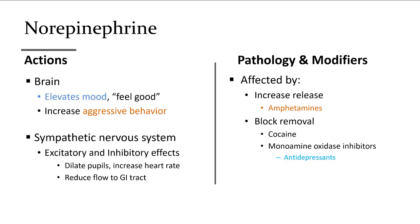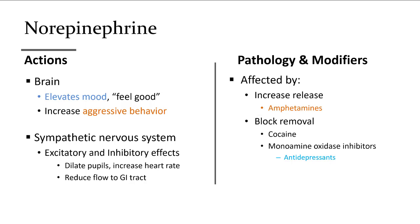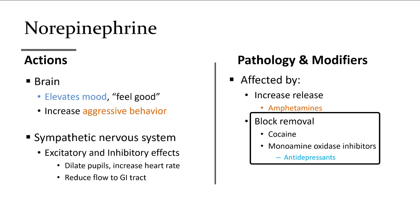Norepinephrine is a feel-good neurotransmitter in the brain, but too much can increase aggressive behavior. The sympathetic nervous system outside the brain also uses norepinephrine — known as noradrenaline — as part of the flight-or-fight response. It's only within certain brain regions that it affects mood or, in excessive amounts, aggression. Amphetamines cause more norepinephrine to be released in the brain. Cocaine and MAOIs block the removal of norepinephrine, causing it to stay in the cleft longer and have prolonged action.